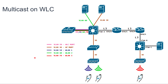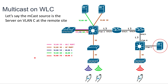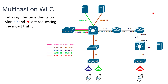In this video we'll go over how Multicast works on the WLC and the wired side of the network. The Multicast source in this case is the server on VLAN C at the remote site, and the clients that require the traffic are connected to the Wi-Fi on VLAN 50 and 70, respectively in the local and remote site.